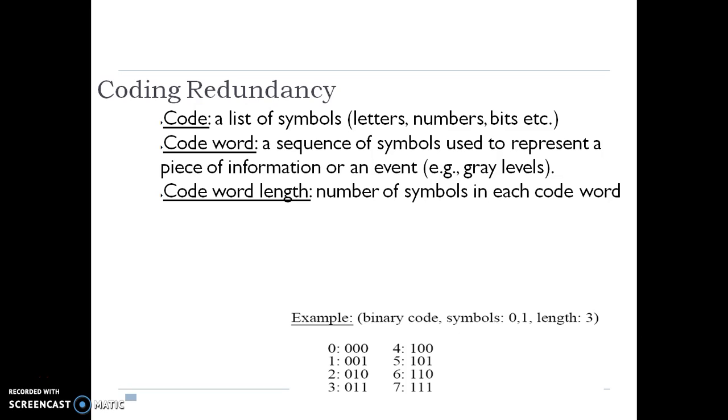Coding redundancy: Code is a list of symbols—letters, numbers, bits, etc. Code word is a sequence of symbols used to represent a piece of information or an event. In image processing, the code word represents gray levels. Code word length is the number of symbols in each code word.